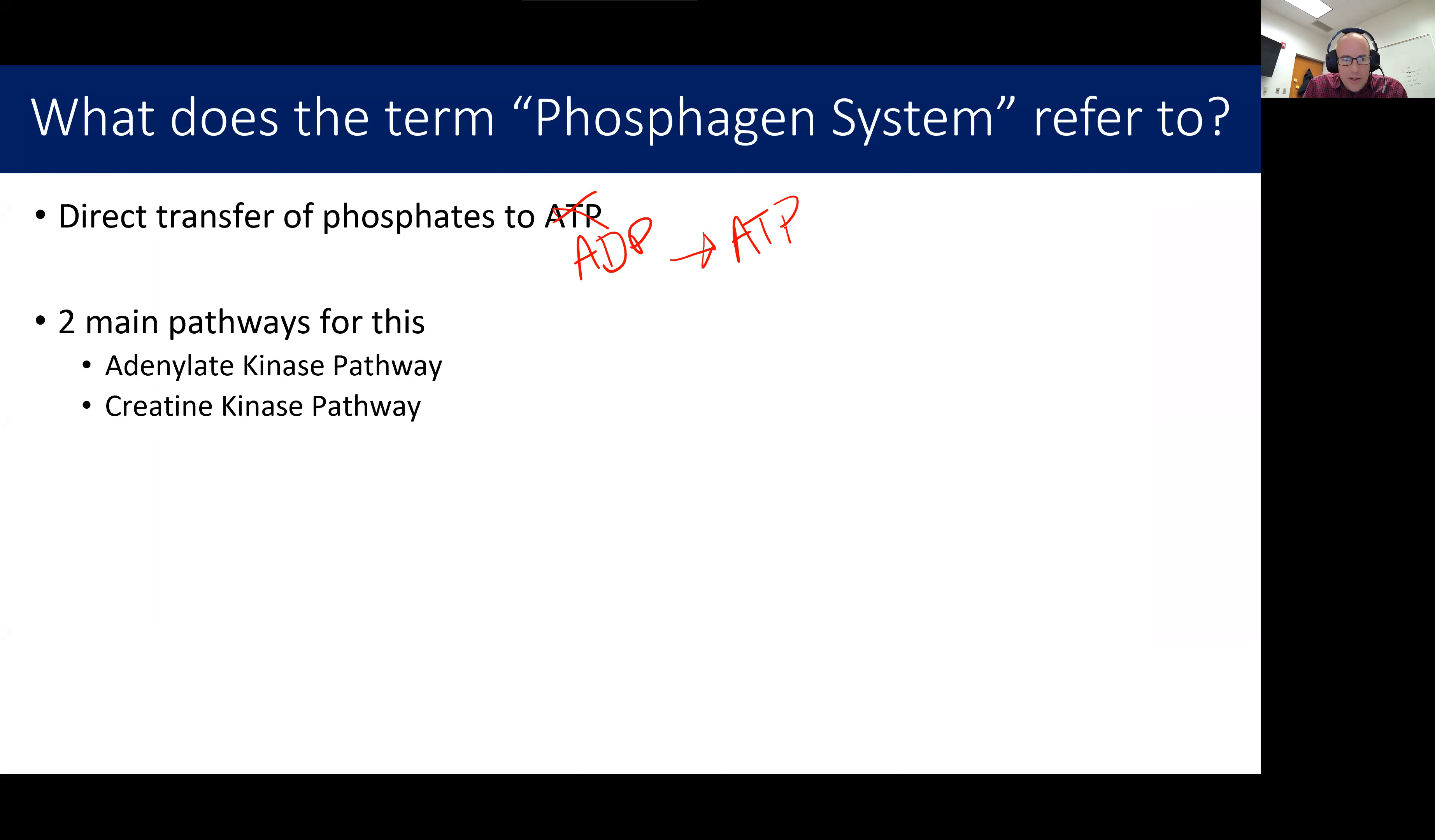We have two main enzymes or pathways that account for this in human skeletal muscle. First is the adenylate kinase pathway. And calling it as a pathway is maybe a little bit of an exaggeration because it's one step. And that's why we can call it just by the name of the enzyme, adenylate kinase. The second one is the creatine kinase pathway.